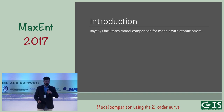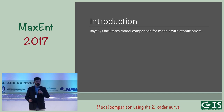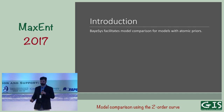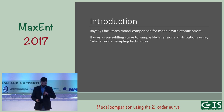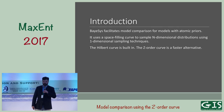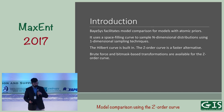The idea behind BASIS is we want to do model comparison for models with atomic priors. That means you have a model equation that is a sum of some components that are all identical in structure, and the parameters in each component must have identical priors. BASIS uses a space filling curve to sample N-dimensional distributions using one-dimensional sampling techniques. The Hilbert curve is built into BASIS, but we think the Z order curve is a faster and thus better alternative.